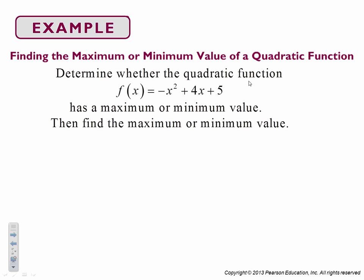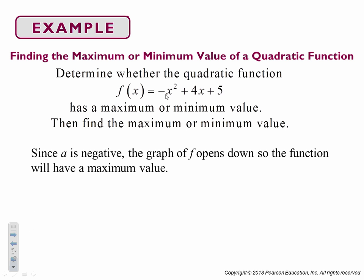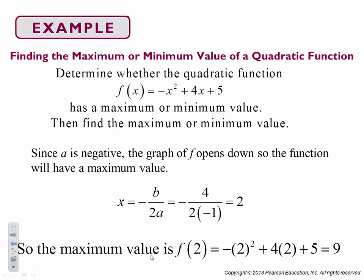Finding the max or min value of a quadratic. Determine whether the quadratic function has a max or min value. Then find it. It opens downward. So it has a maximum. We find our x coordinate. The maximum value is at nine. Because we plug in our vertex coordinate.